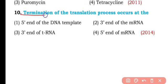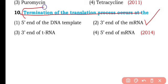Question number ten. Termination of the translation process occurs at: the 5' end of DNA template, the 3' end of messenger RNA, the 3' end of transfer RNA, or the 5' end of messenger RNA? So the correct answer is option two — termination of translation occurs at the 3' end of messenger RNA.